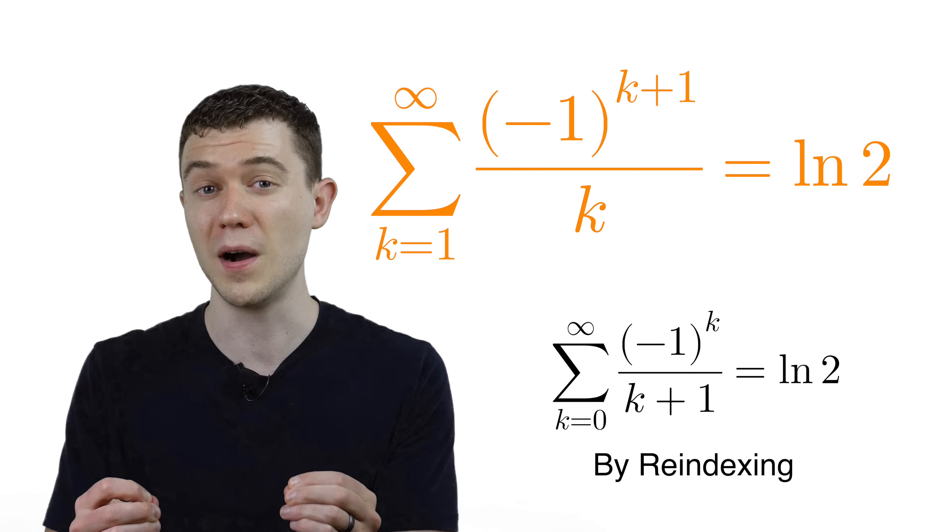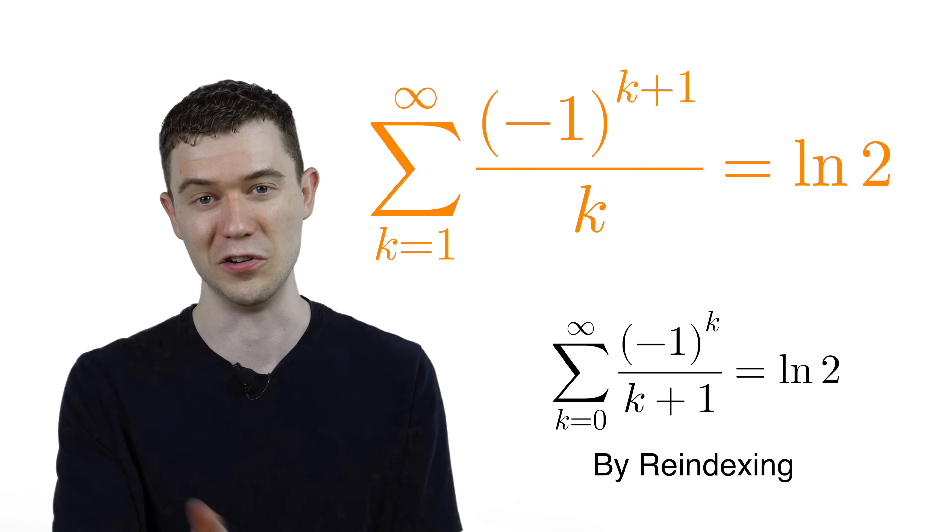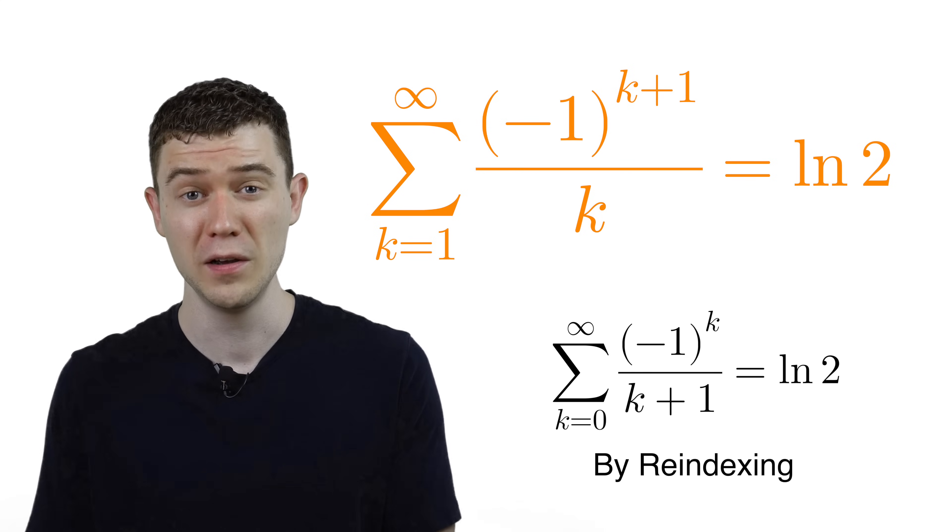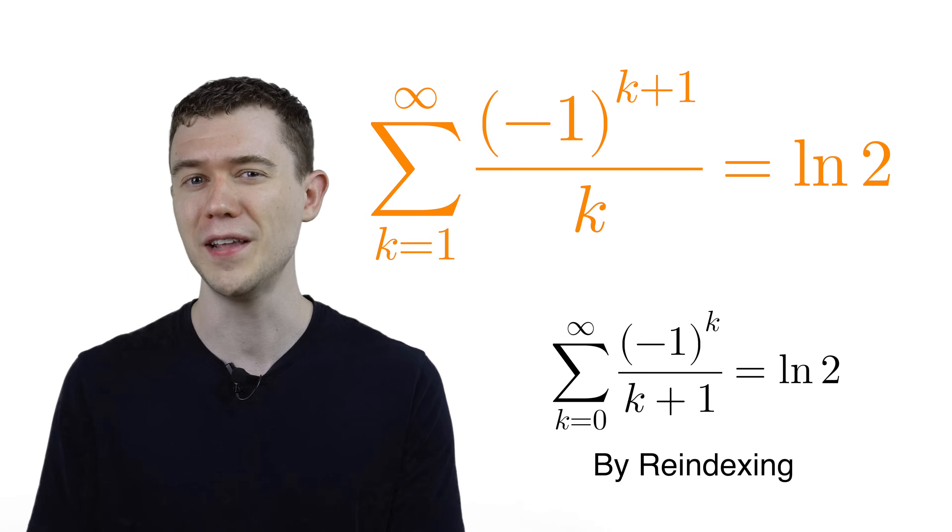The sum of the alternating harmonic series is natural log 2. If you like infinite series where you can actually compute the sum, you should click the video on the screen. I'll sum you in that one.